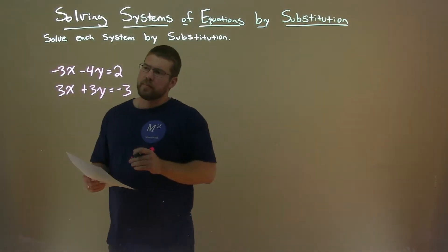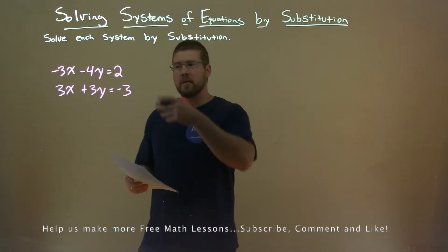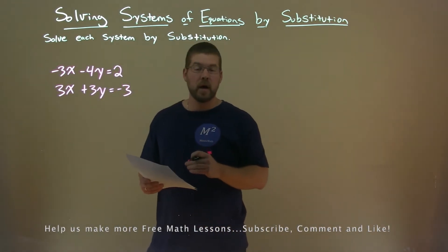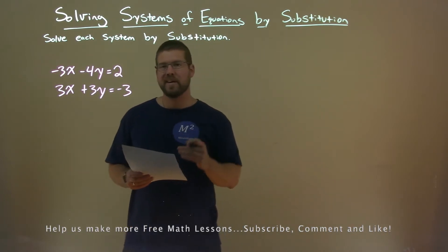We're given this problem here: minus 3x minus 4y equals 2, and 3x plus 3y equals negative 3. And we want to solve this system by substitution.